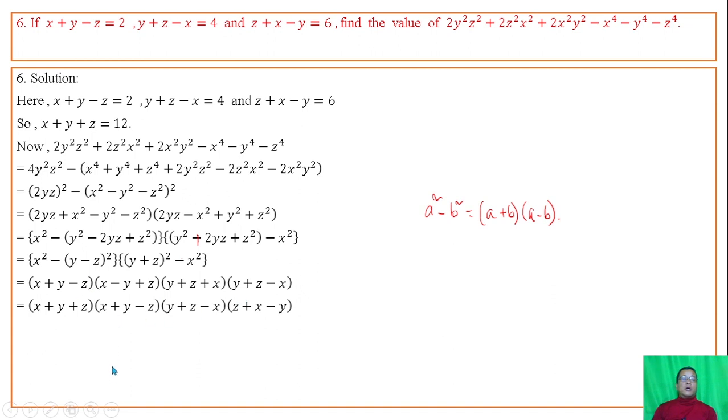The factors are organized and the corresponding values are substituted. The product of the factor values gives the final numerical answer, which equals 5 after computation.